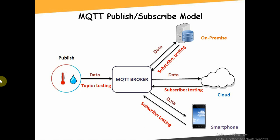The publisher and subscriber both connect to the broker. The broker mediates communication between the publisher and subscriber. If any client publishes a message on a subscribed topic, the broker forwards that message to any client that has subscribed to that topic.